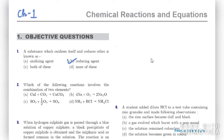The second question asks which of the following reactions involves the combination of two elements. We have four reactions. We need to find which one involves a combination of two elements. In the second option we have two elements — sodium and oxygen — and the resultant is their combination. So the right option is B.